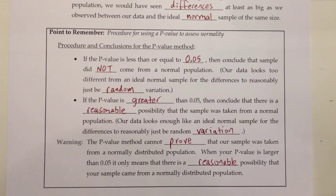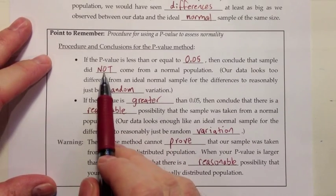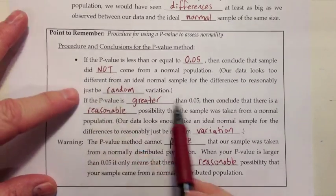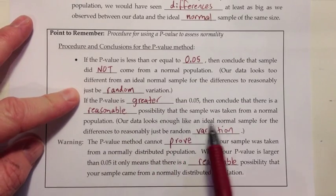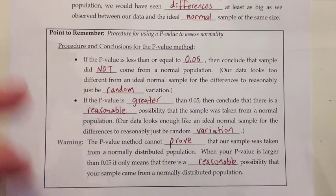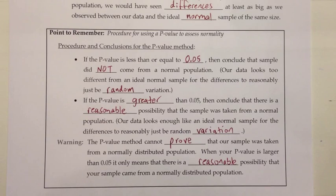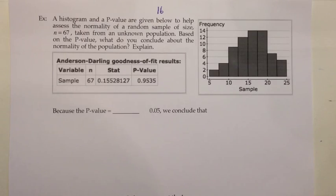There's never a case in this assessment of normality where we can say we know that a population is normal. Sometimes we can say we're confident it's not normal, and at other times we can say it looks like a reasonable possibility that it's normal, but never are we seeing enough information to prove that it is normal. So let's go ahead and look at a couple examples using this p-value method — we'll have the histogram here too so we can look at both of them together.